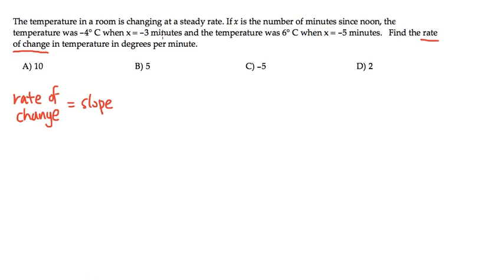Right here, it says the temperature was -4°C when x was -3 minutes. So we have our first point, -3 (this is for the x, the minute is for the x). So let me label that: x is -3, comma, the temperature was -4 (this -4 will be for the y value). So this is our first point: (-3, -4).